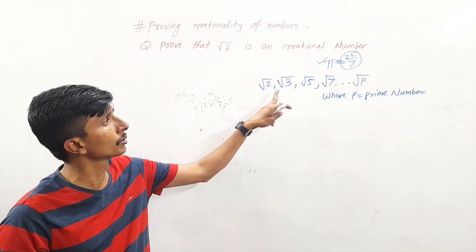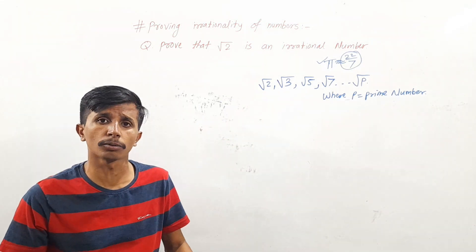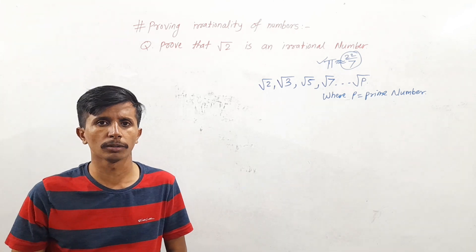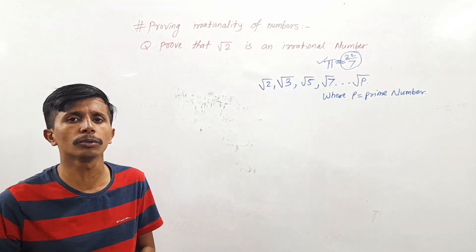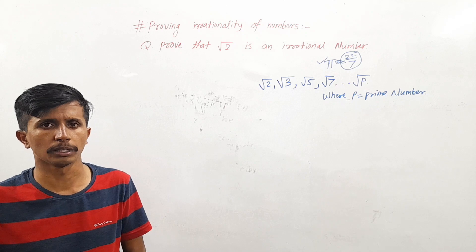Now here, numbers are given: root 2, root 3, root 5, root 7, root 11. Jitne bhi prime numbers hongi, jo square root ke andar hai, un numbers ko hum irrational number kehte hai.